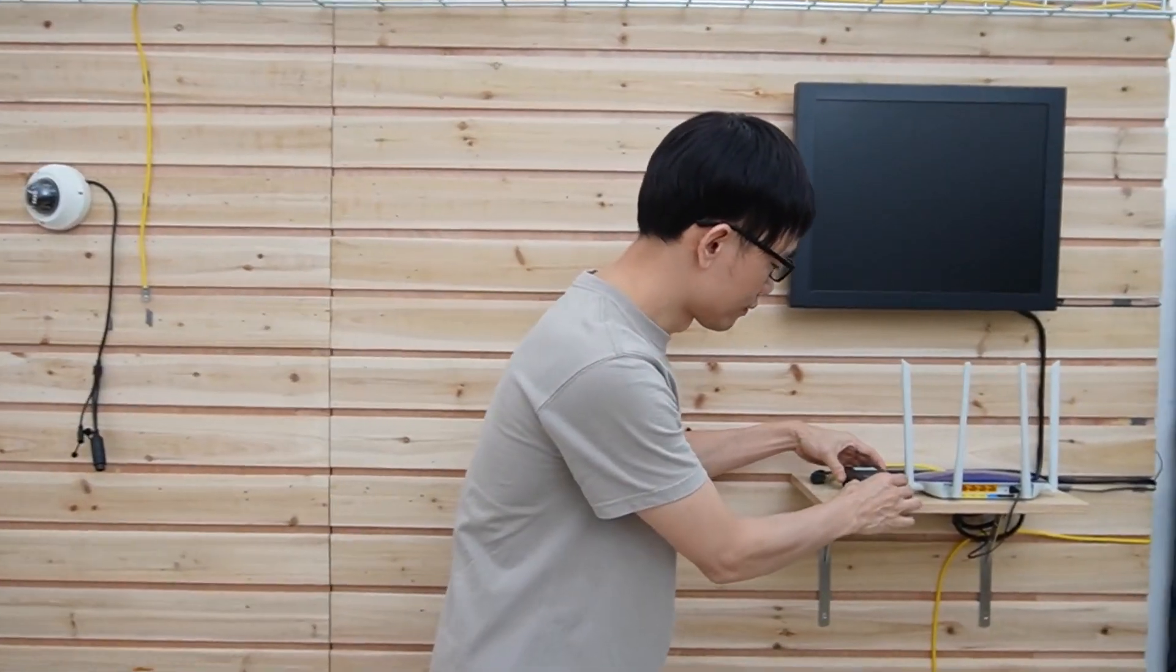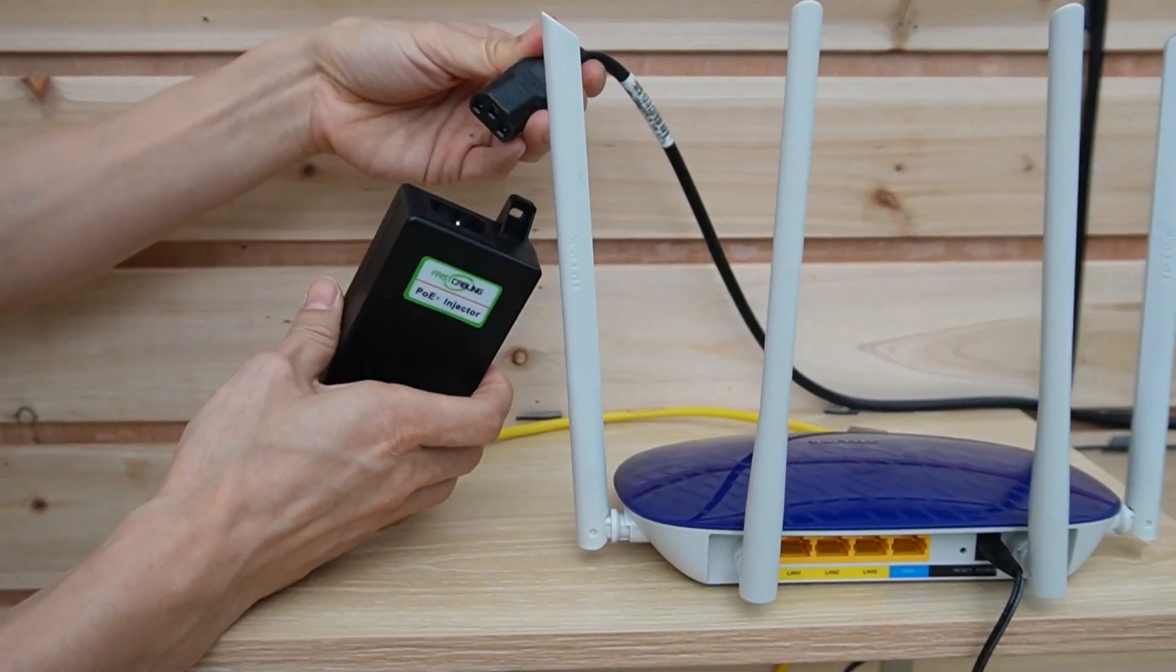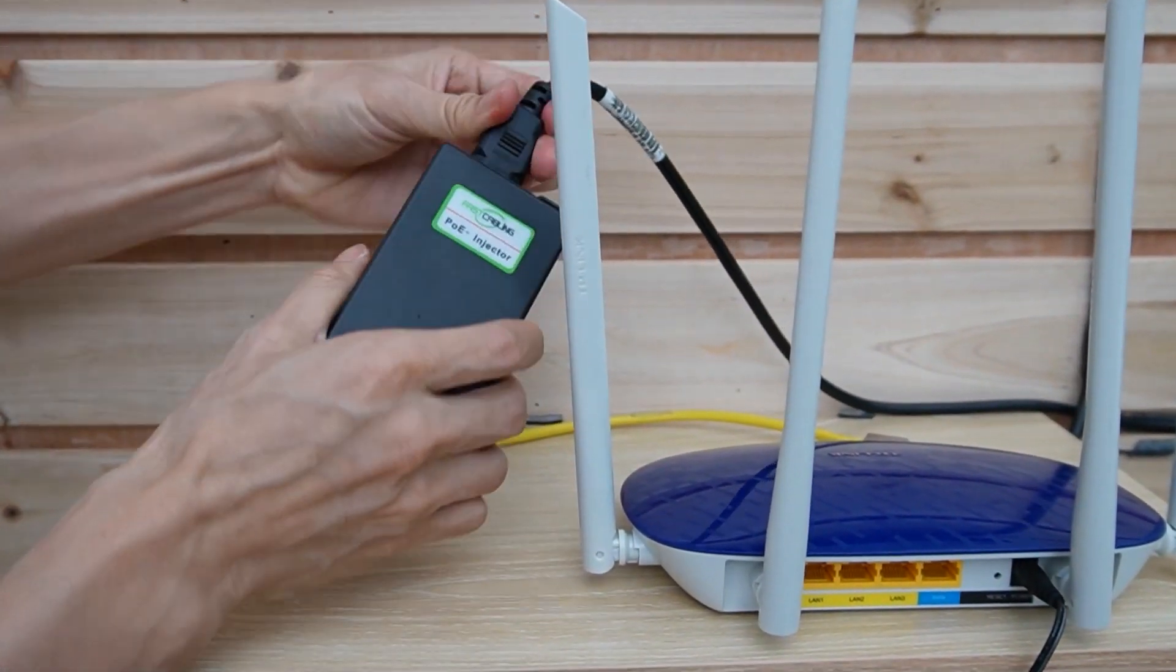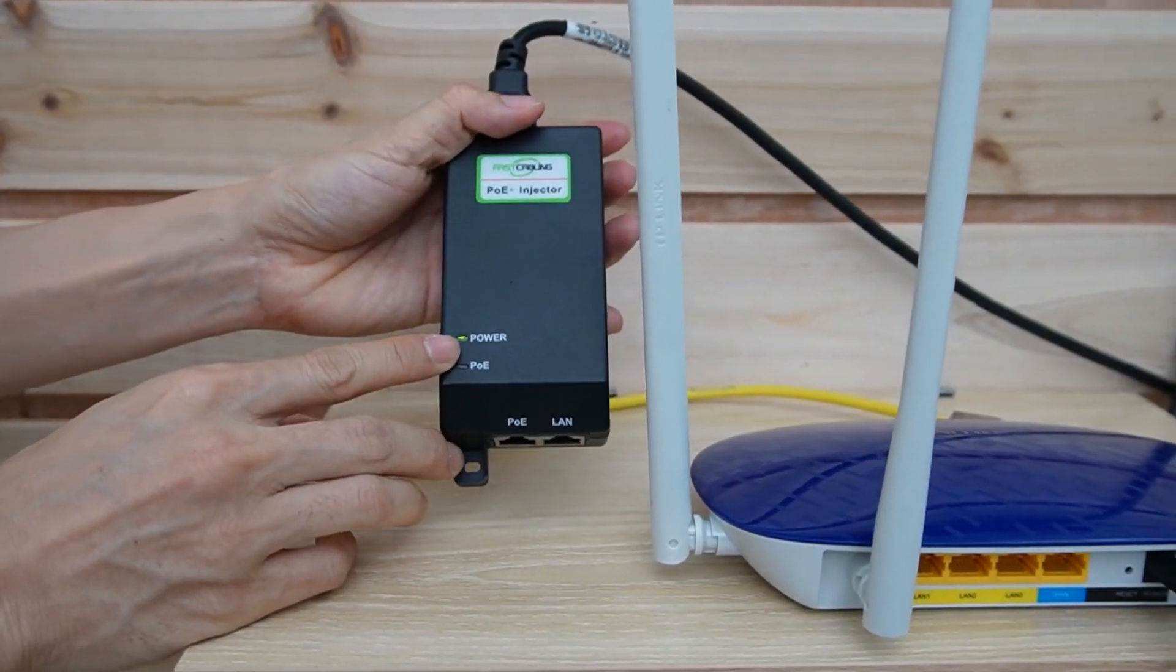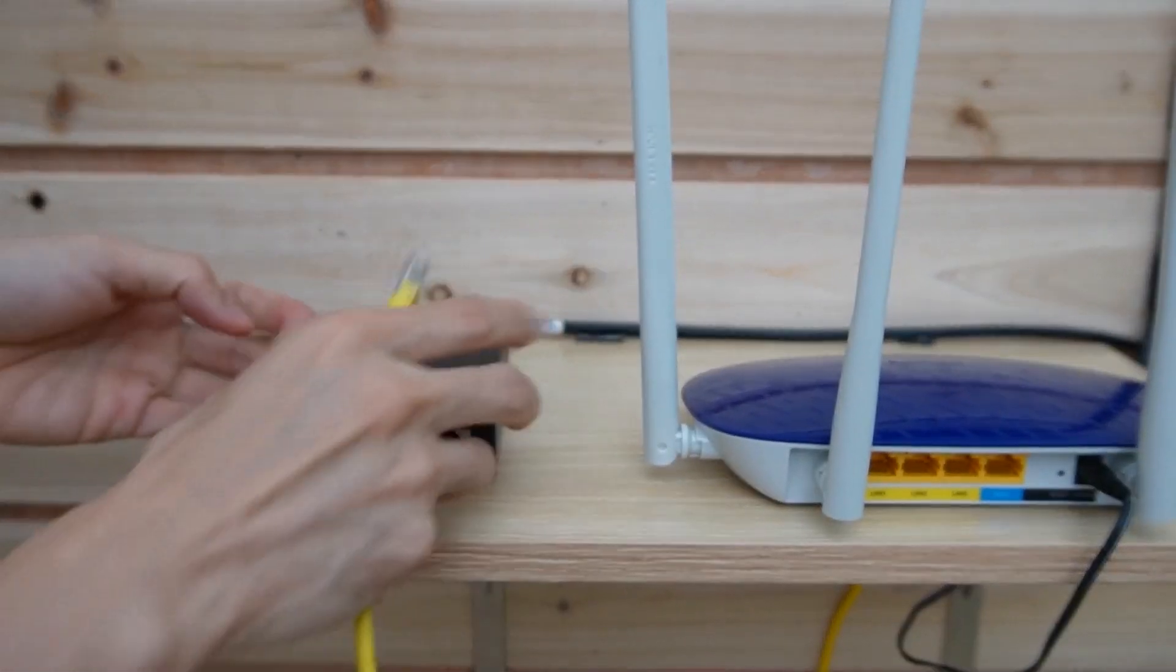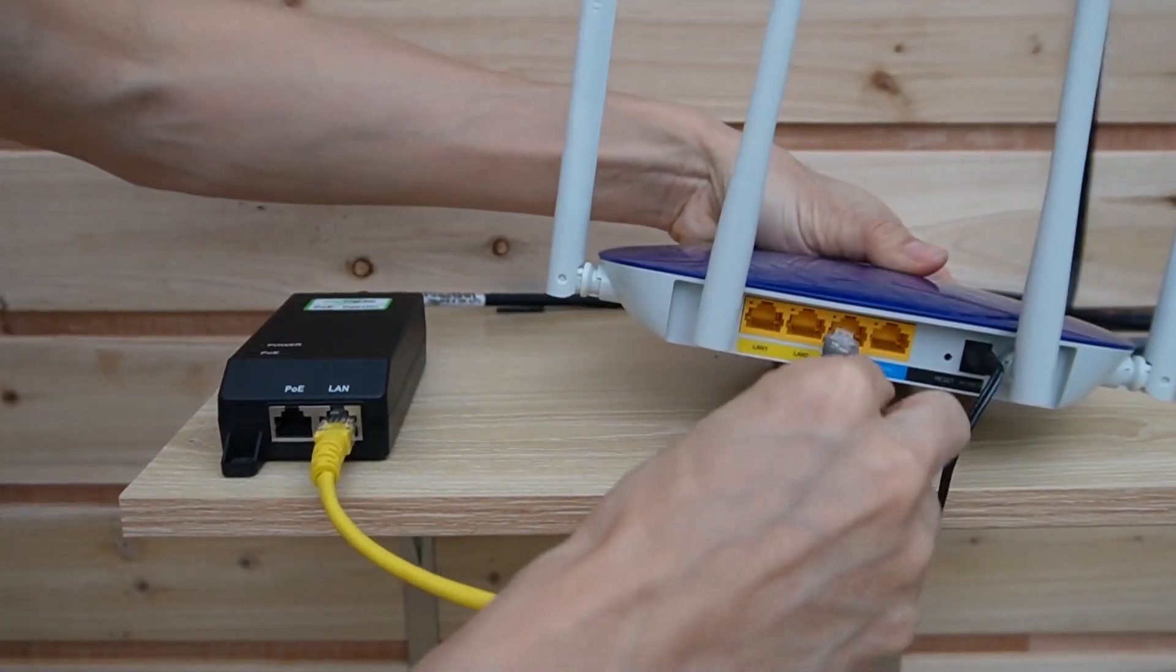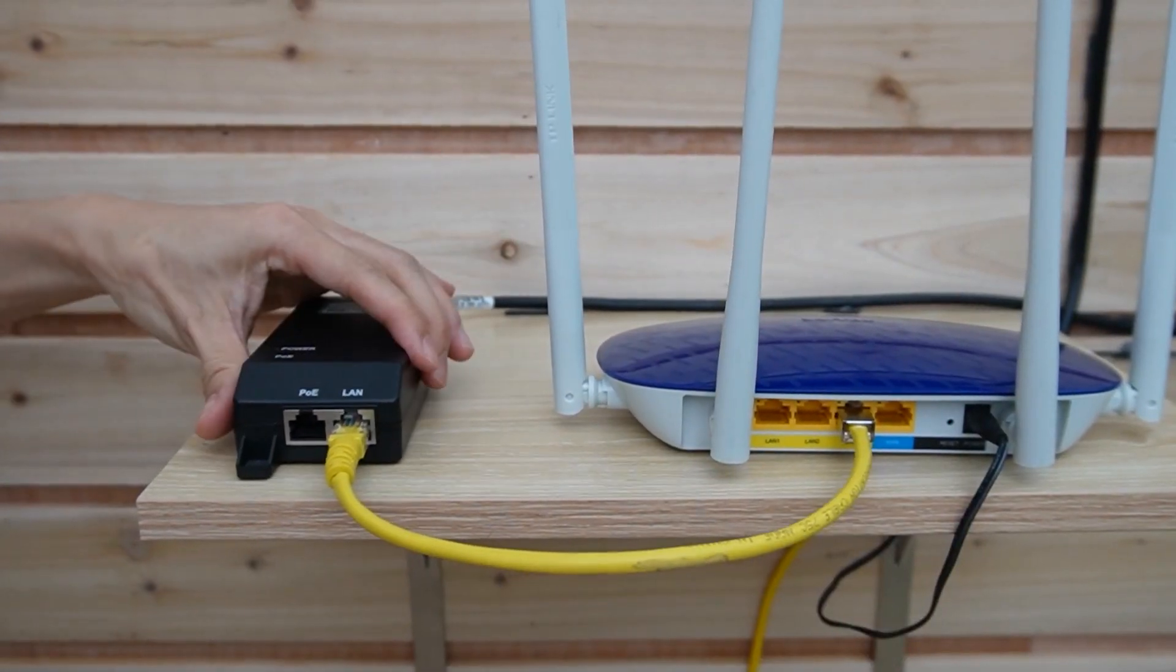The connection is pretty straightforward. First, let me set this PoE injector next to the router. This is the AC power input. Let's connect the AC power to the PoE injector. Now the PoE injector is getting the power. I will need this short patch cord to link the LAN port to one of the network ports on the router, so we can have the network access from the router.